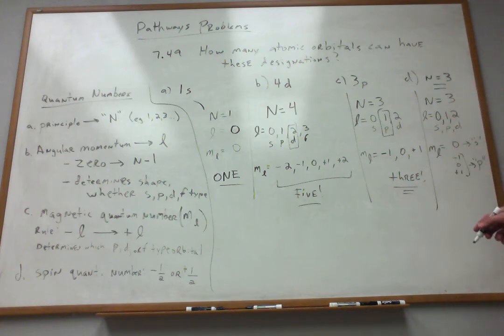But I'm not finished, because potentially my l could be 2. And if that's the case, then I could have a minus 2, a minus 1, a 0, a plus 1, and a plus 2. So there's actually 5 there, and those would be my d-type orbitals.